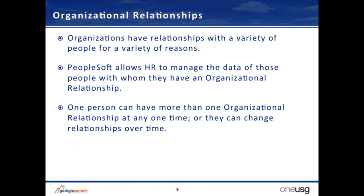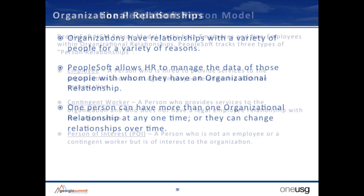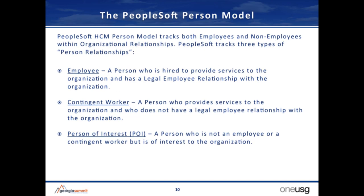Organizations have relationships with a variety of people for a variety of reasons. You've got employees, vendors, and volunteers. PeopleSoft allows HR to manage the data of all those people, and you can have more than one organizational relationship at any one time—and they can change relationships over time. There are a few key relationship types: an employee, a contingent worker who provides services to the organization but does not have a legal employee relationship, and a person of interest.